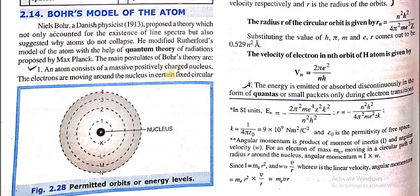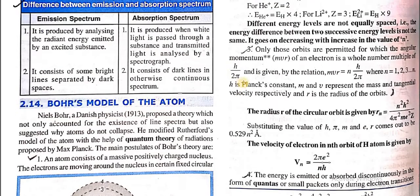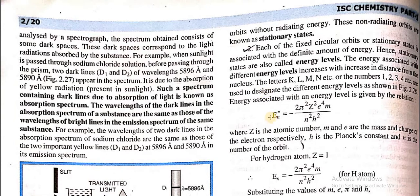According to Bohr, an atom consists of a highly positive charge present at the center of an atom, which we call the nucleus. The electrons move around the nucleus in certain fixed circular orbits without radiating energy. These non-radiating orbits are known as stationary states.